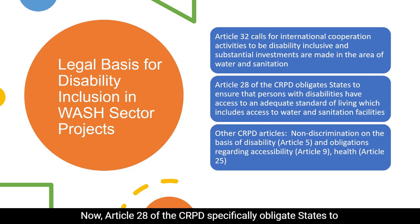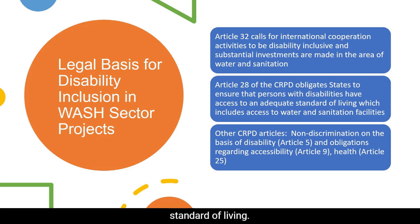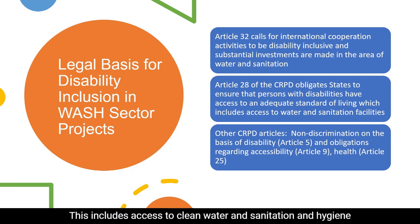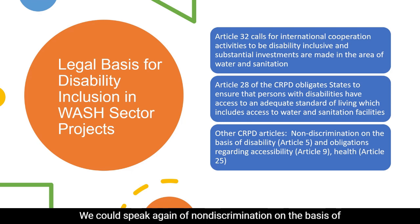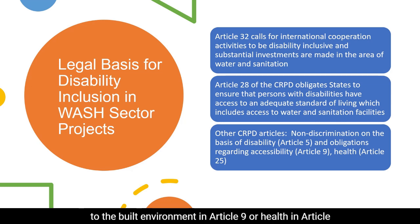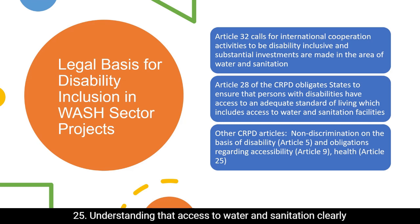Article 28 of the CRPD specifically obligates states to ensure that persons with disabilities have access to an adequate standard of living, including access to clean water, sanitation, and hygiene facilities. Many other articles are also relevant — Article 5 on non-discrimination, Article 9 on accessibility to the built environment, and Article 25 on health, understanding that access to water and sanitation is a major determinant of health.